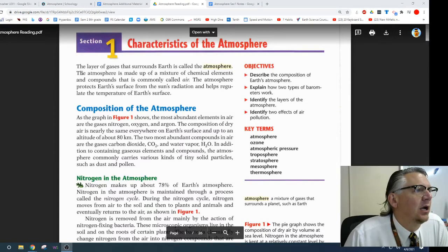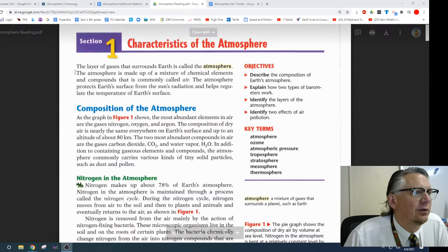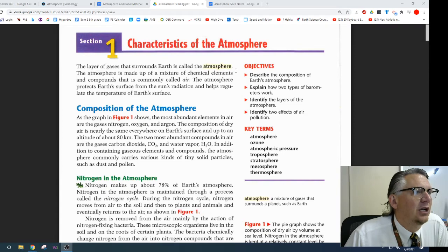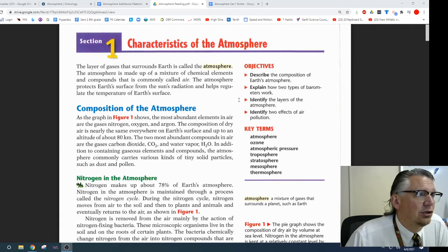Characteristics of the Atmosphere. The layer of gases that surround the Earth is called the atmosphere. The atmosphere is made up of a mixture of chemical elements and compounds that is commonly called air. The atmosphere protects Earth's surface from the sun's radiation and helps regulate the temperature of the Earth's surface.